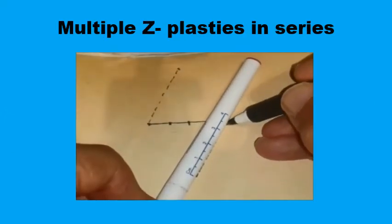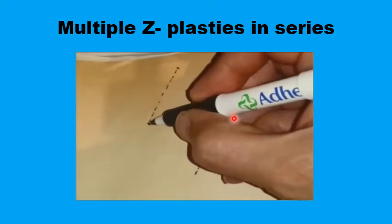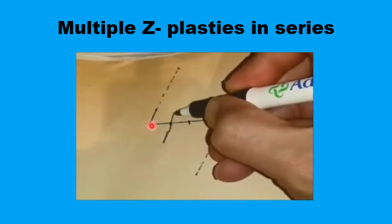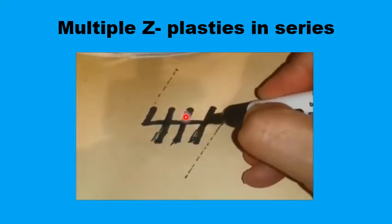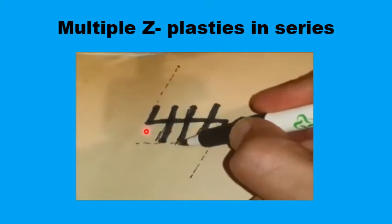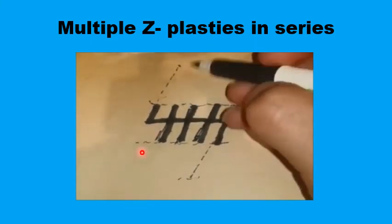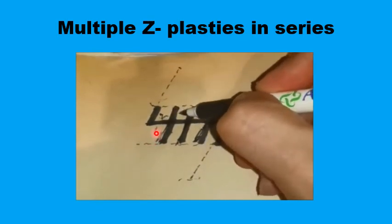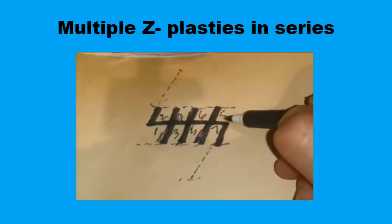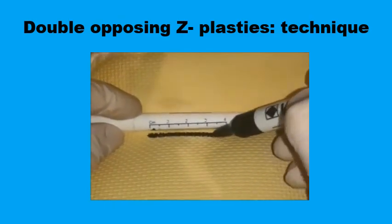This demonstrates the in-series type of multiple Z-plasties. Starting with a 4 cm scar or web, rather than one single large 4 cm Z-plasty, we perform four smaller Z-plasties each with 1 cm limbs, keeping the angles at 60 degrees each. This uses much less tissue above and below the central limb than a single large Z-plasty would require.